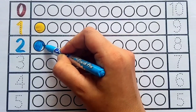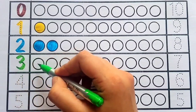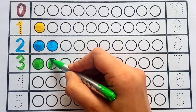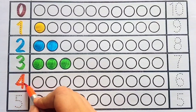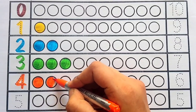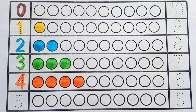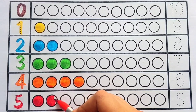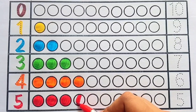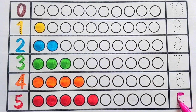Zero — yellow color. One: one circle — sky blue color. Two: two circles — light green color. Three: three circles — orange color. Four: four circles — red color.